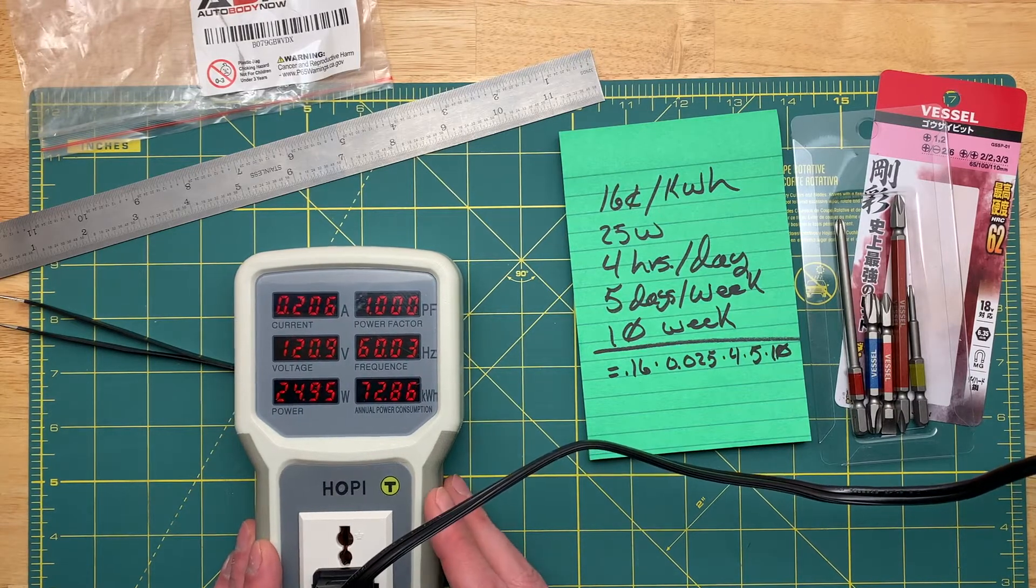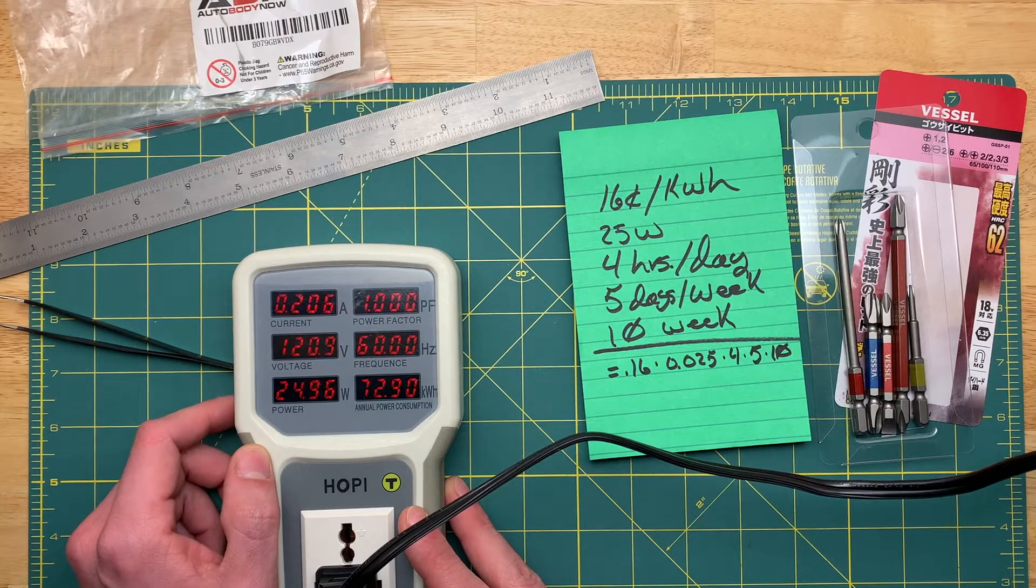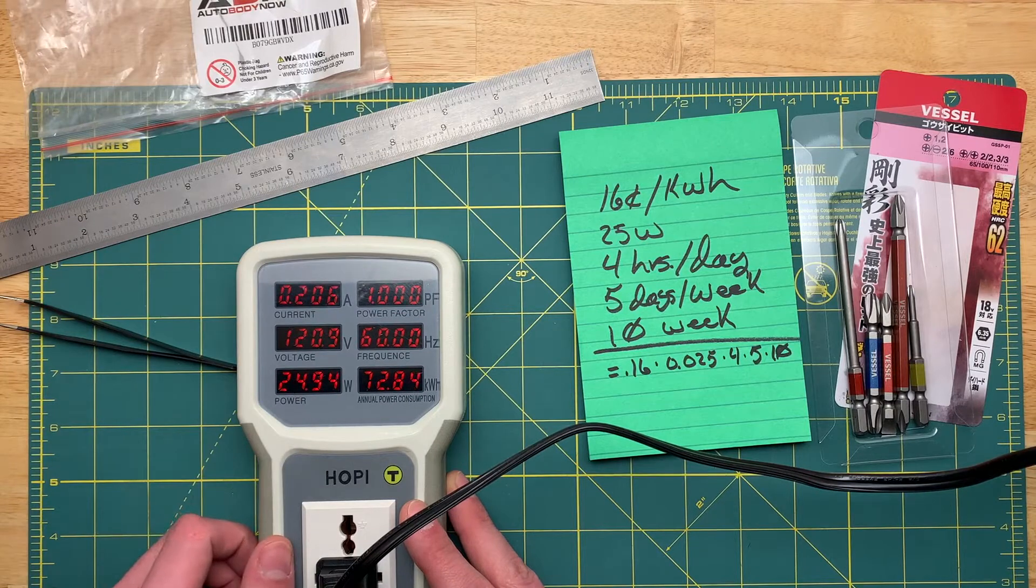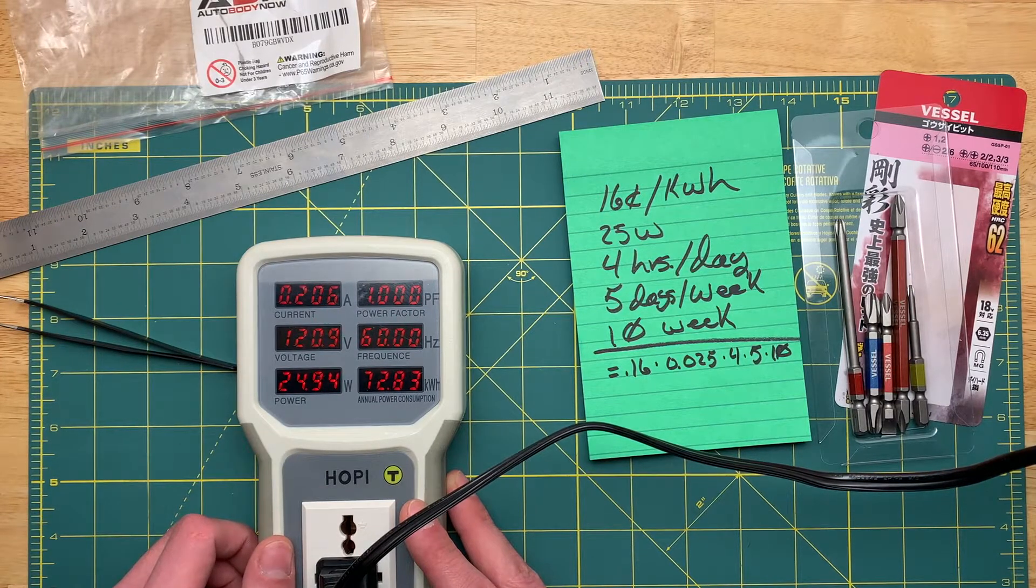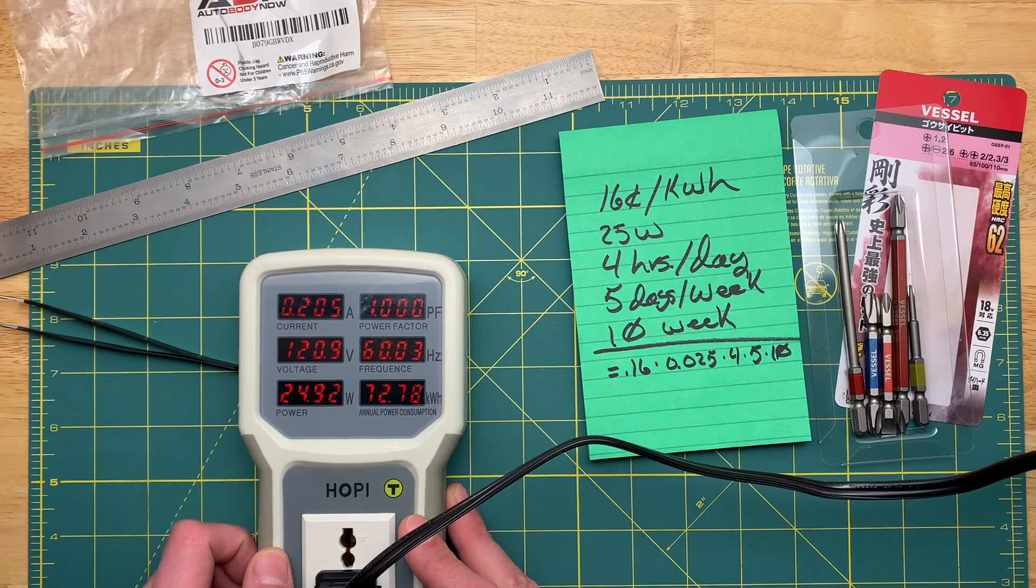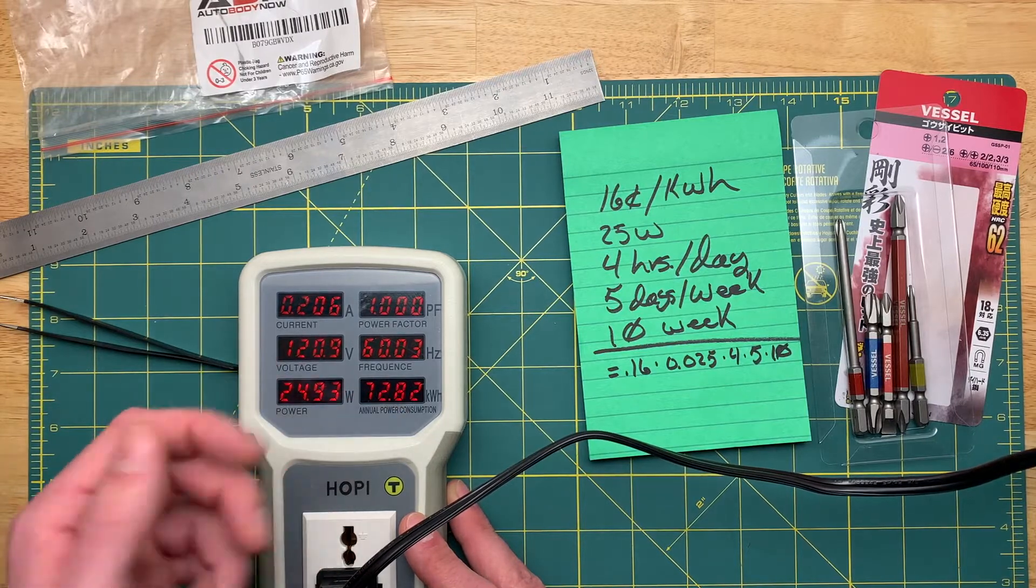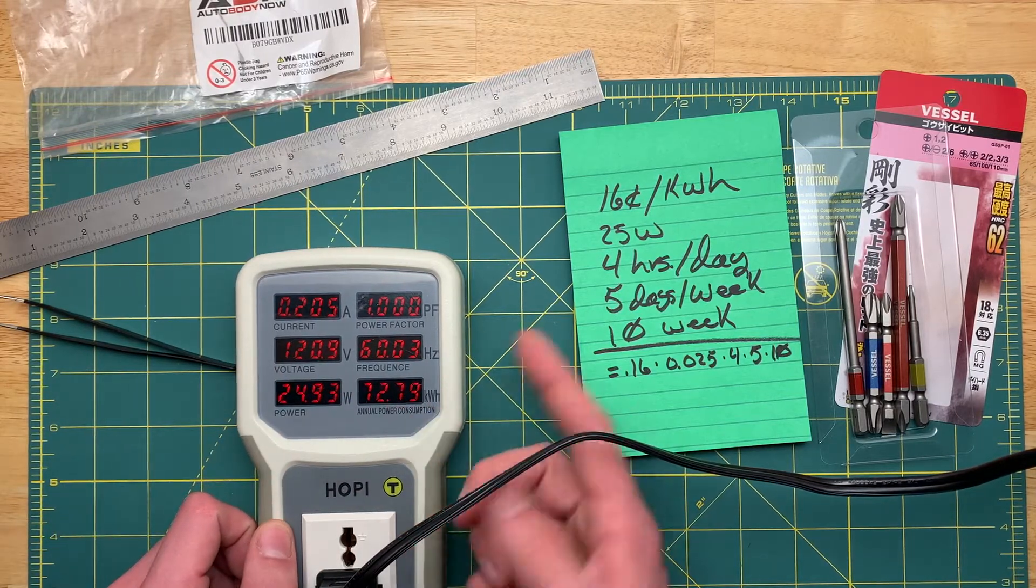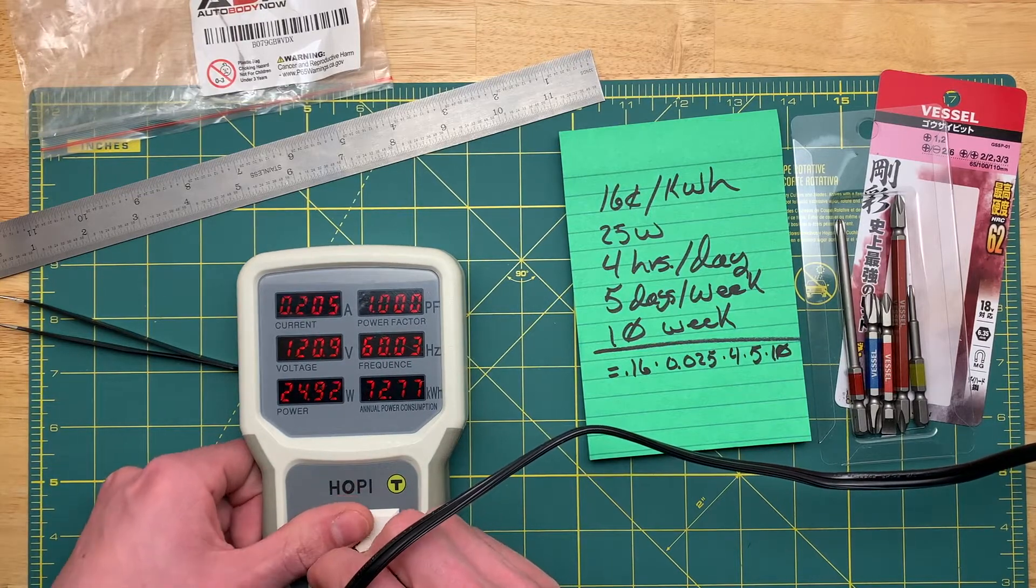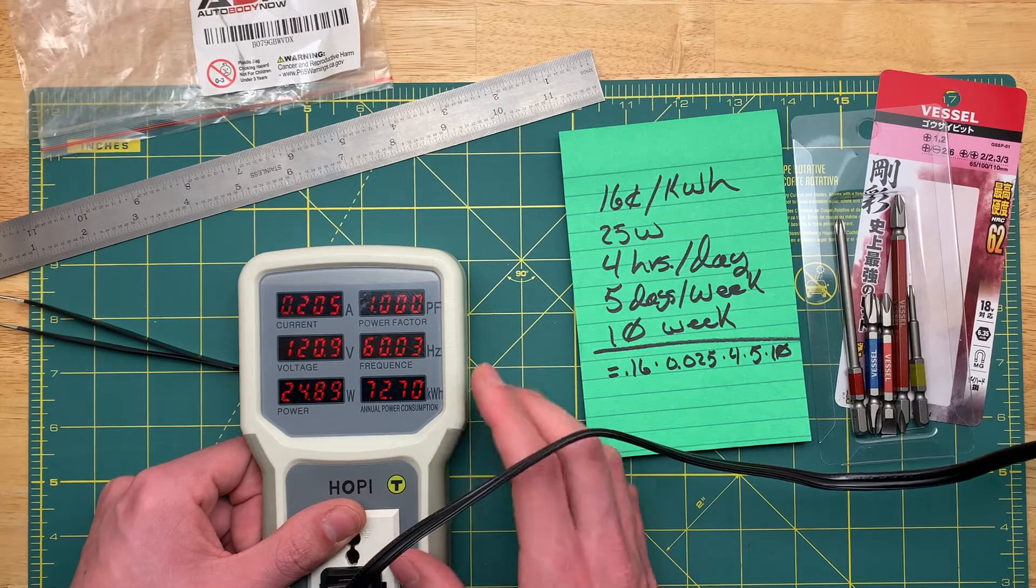All right, 206 milliamps. Our voltage is right about 120, 121 volts, and we're looking at just under 25 watts. So that is right on its rating. Power factor one, I would expect no less from a resistive element. Ignore this, I haven't programmed this to say anything about price.